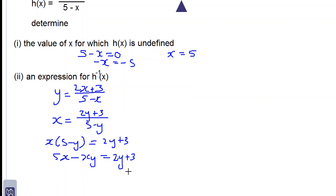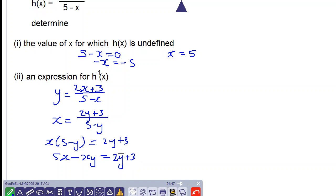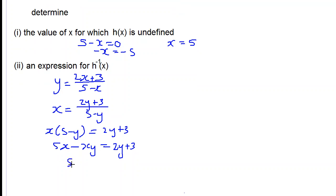We bring all the terms with y on one side of the equal sign, so we add xy to both sides and subtract 3 from both sides. So we will have 5x minus 3 is equal to 2y plus xy.